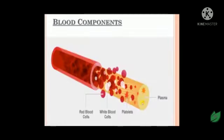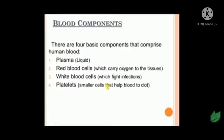Hi students, let us look at the structure of blood. Observe the picture — how many components are present in blood? The blood components: first, plasma; second, red blood cells; third, white blood cells; fourth, platelets. There are four basic components that comprise human blood: plasma (liquid), red blood cells (which carry oxygen to the tissues), white blood cells (which fight infections), and platelets (smaller cells that help the blood to clot).